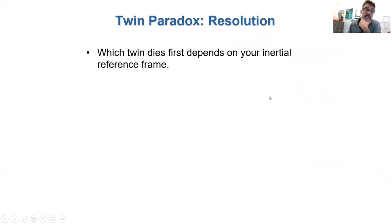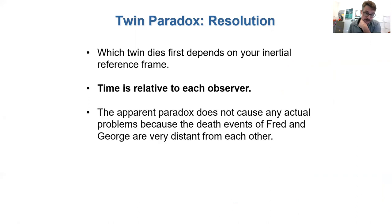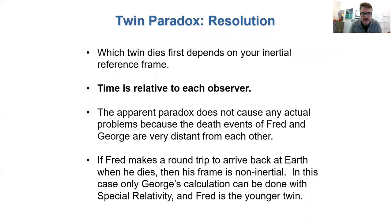So which twin dies first depends on your inertial reference frame. Time is relative to each observer. This is only an apparent paradox because there's no actual causal implications of this. Fred and George die at places that are very distant away from each other. So they can't communicate useful information to each other at the day of their death over that big distance because Fred has flown so far away at 20% the speed of light. So we really think that this is the way it happens. And then if Fred makes a round trip and comes back, then it's no longer special relativity because he's accelerating and his clock slows down for a different reason.